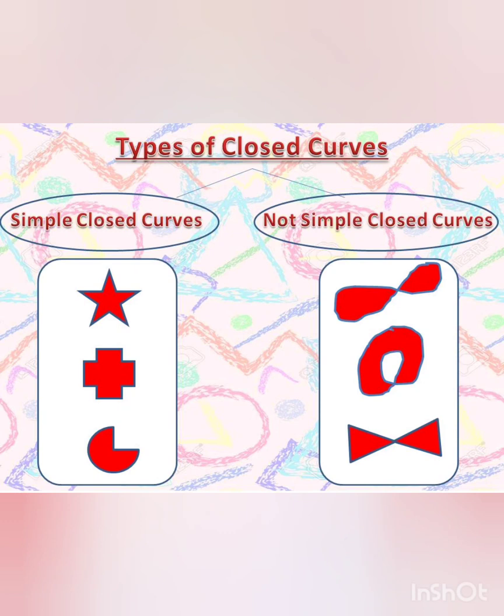There are two types of closed curves: simple closed curves and not simple closed curves. Closed curves in which boundaries do not cross each other are called simple closed curves. Look at the examples. Closed curves in which boundaries cross each other are not simple closed curves. I hope you can understand this through the given figures.